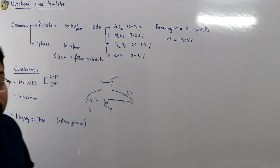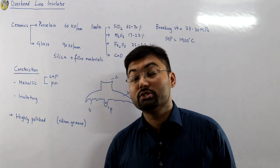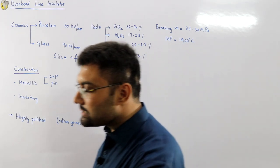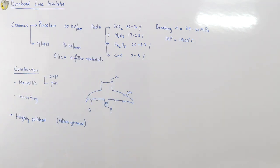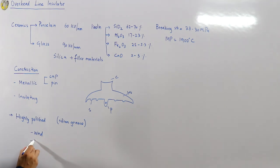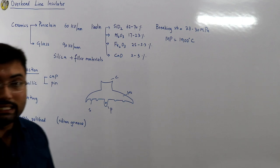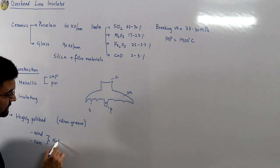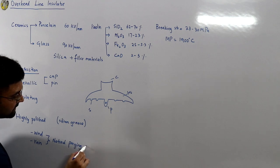Silicon grease is applied so that dust does not deposit on the surface. On a highly polished surface, dust either gets blown away by wind or washed away by rain. These two events — wind and rain cleaning — are called natural purging events.